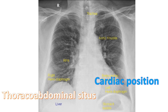Chest X-ray is useful in evaluating the cardiac position and visceral situs, as it gives an overview of cardiac position in the thorax, position of left and right bronchi, aortic arch, liver, and stomach air bubble.